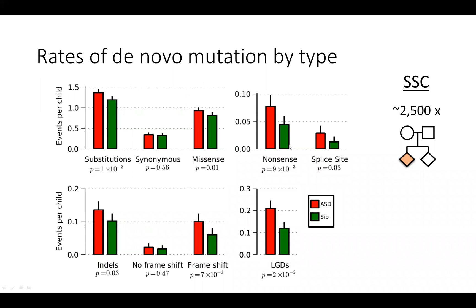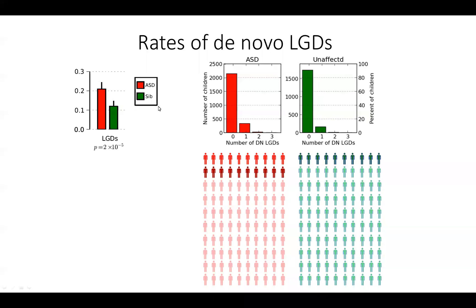Zooming in: on average, an affected kid has 0.2 de novo LGDs in their exome versus about 0.11 for an unaffected kid. We tabulated the affected kids in the Simons Simplex Collection based on how many had 0, 1, or 2 de novo LGDs, and similarly for unaffected kids. The number of kids with one de novo LGD was significantly higher in affected kids than in unaffected kids.